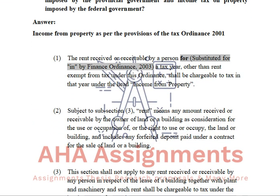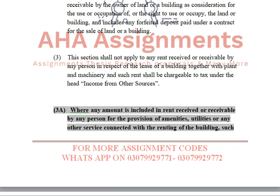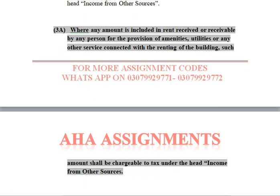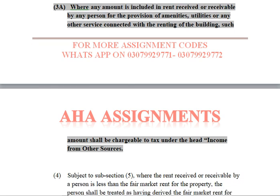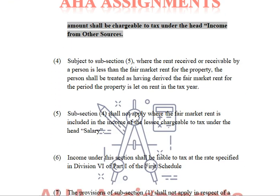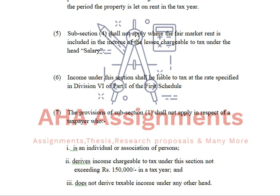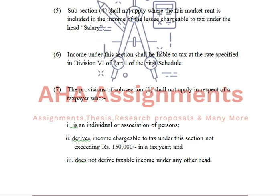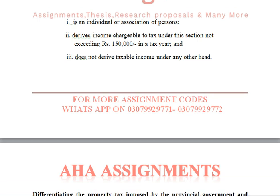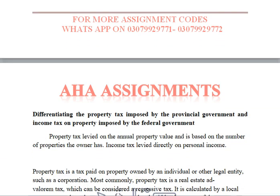In question number 2, the first head is income from property as per the provisions of Tax Ordinance 2001. I have described the relevant sections from the 2001 ordinance in complete detail. It is provided in complete detail. If you want, you can write it in paragraph form, but it is better to write 10 points as it is clearer.